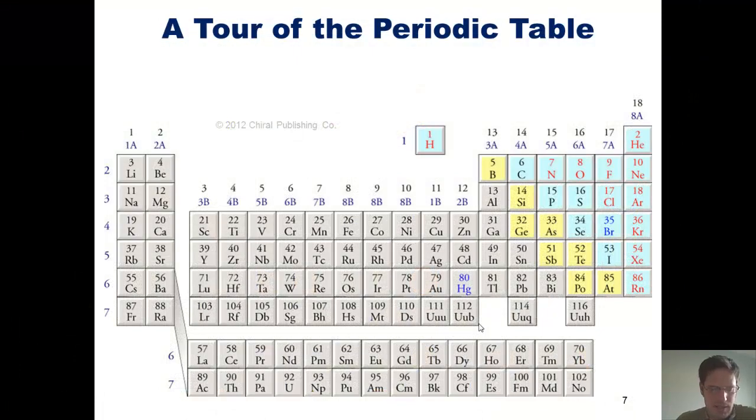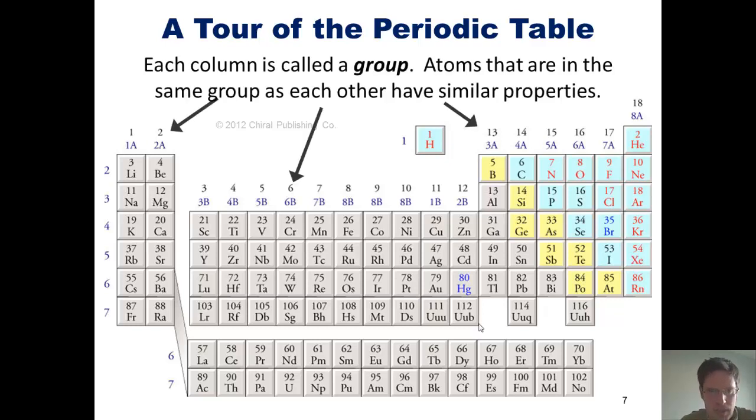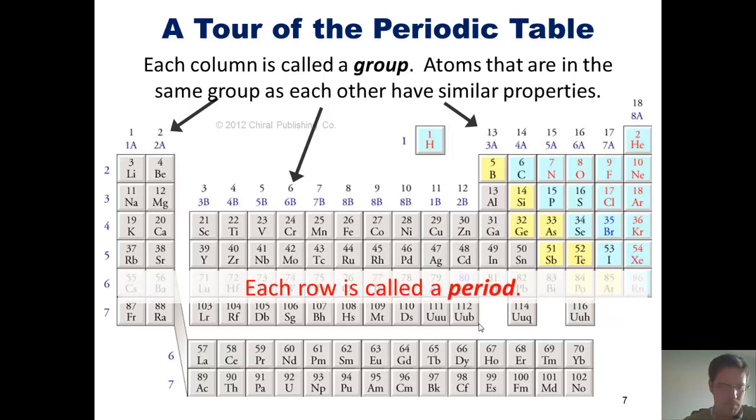Now for some neat periodic table vocabulary. As we look across the periodic table, it's important for you to remember that each column in the periodic table is called a group. Atoms that are in the same group or column as each other have similar properties. Similarly, each row in the periodic table is called a period.